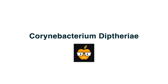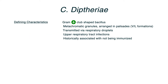The next pathogen we'll talk about is Corynebacterium diphtheriae, the bacteria that causes diphtheria. Diphtheria is a gram-positive club-shaped bacillus. You'll be able to pick it up on a slide because it has metachromatic granules and the bacteria is arranged in what's called palisades — a fancy way of saying it's V- or L-shaped.